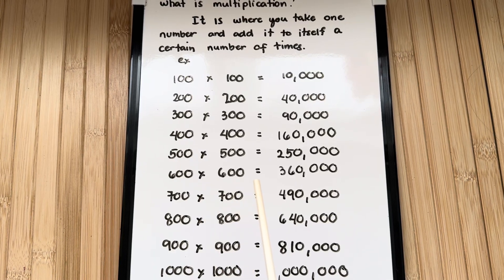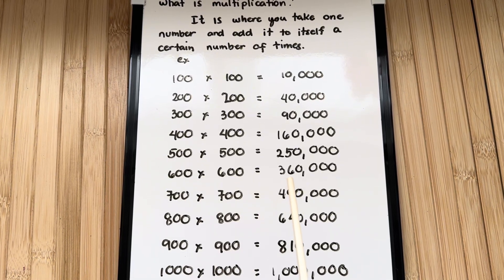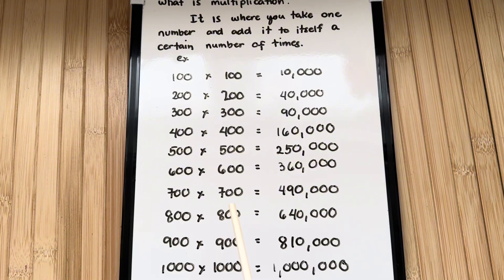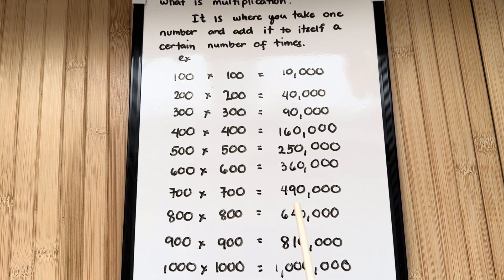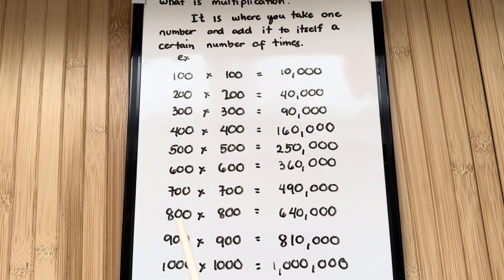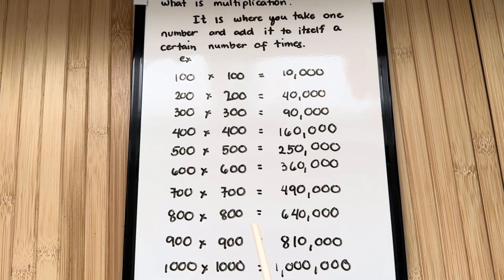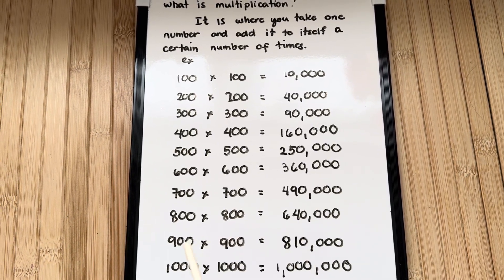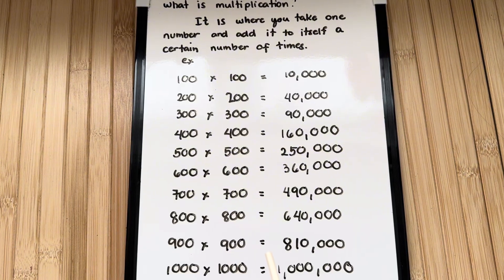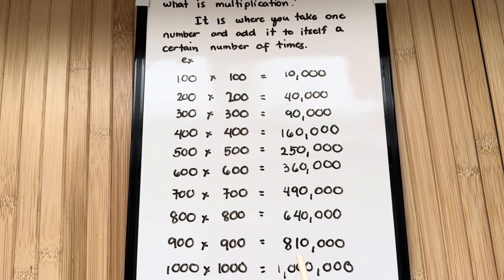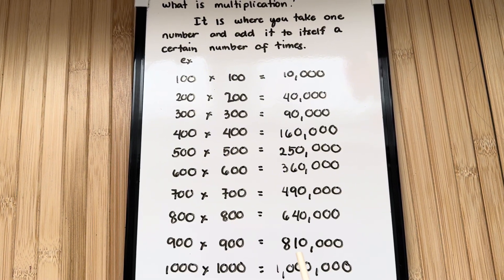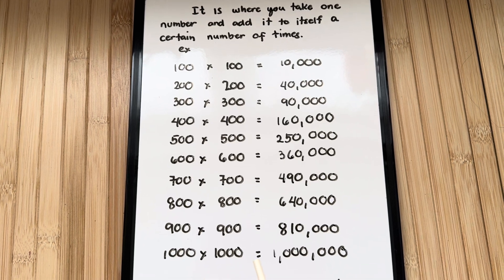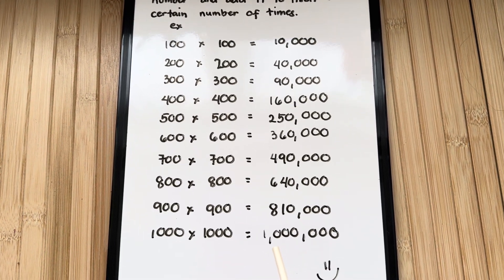600 times 600 is equals to 360,000. 700 times 700 is equals to 490,000. 800 times 800 is equals to 640,000. 900 times 900 is equals to 810,000. And lastly, 1,000 times 1,000 is equals to 1,000,000.